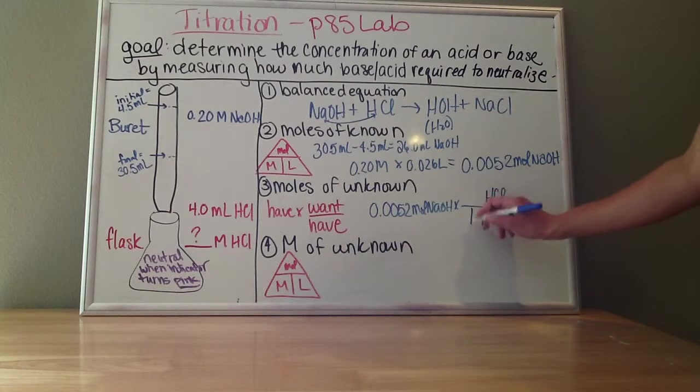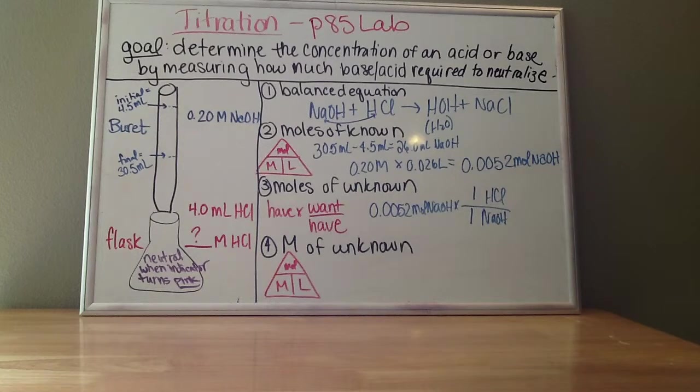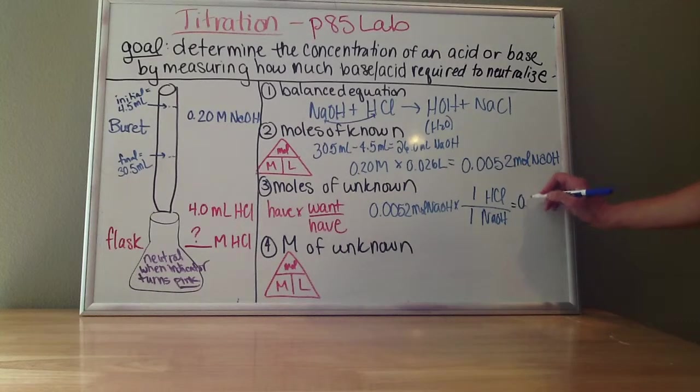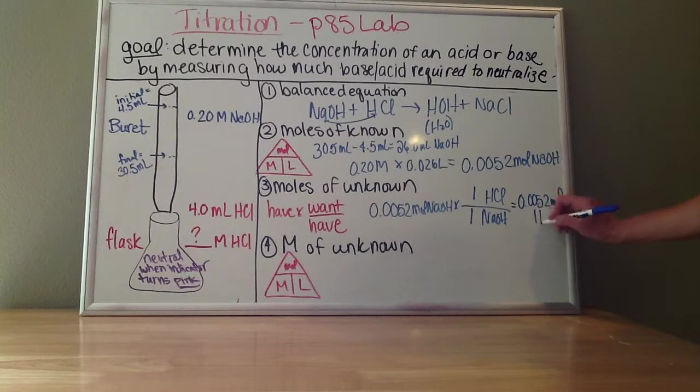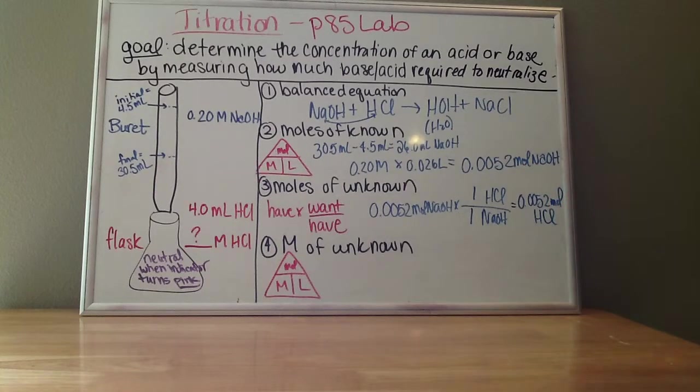So that means that every one NaOH reacts with one HCl. It's all one-to-one ratio. So if I had 0.0052 moles of NaOH, that means there were also 0.0052 moles of acid in my beaker.